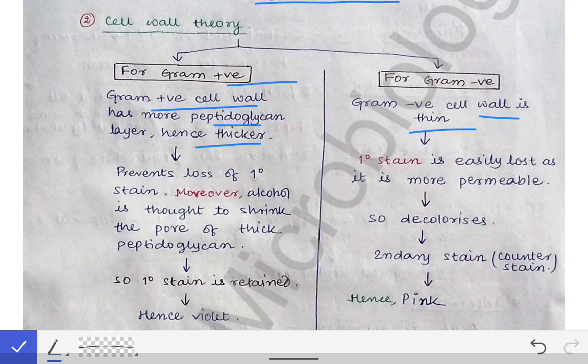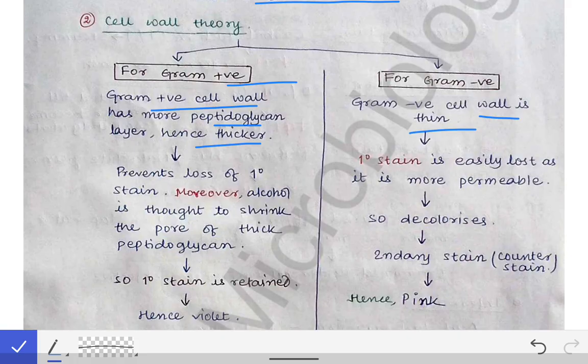When we add the primary stain, it enters the cytoplasm, and then we add the mordant — Gram's iodine — which also enters the cytoplasm and forms a complex with the primary stain. In Gram-positive bacteria, this dye-iodine complex cannot pass out through the thick cell wall. In Gram-negative bacteria, however, the thin cell wall allows the complex to easily pass through and get washed out from the cytoplasm.